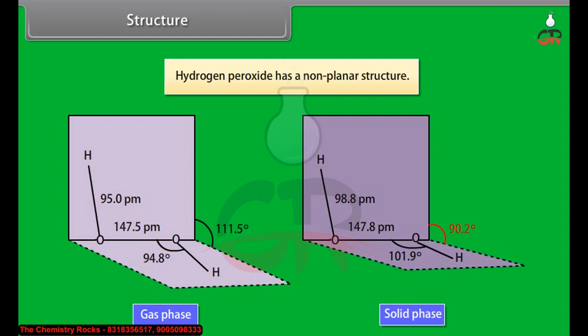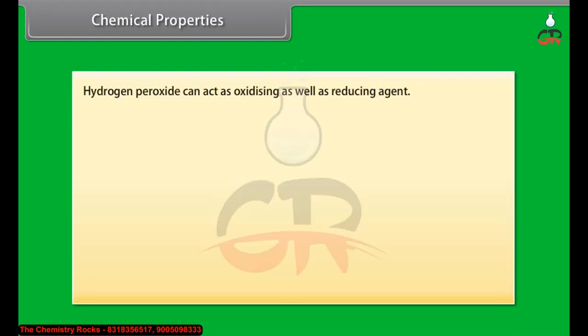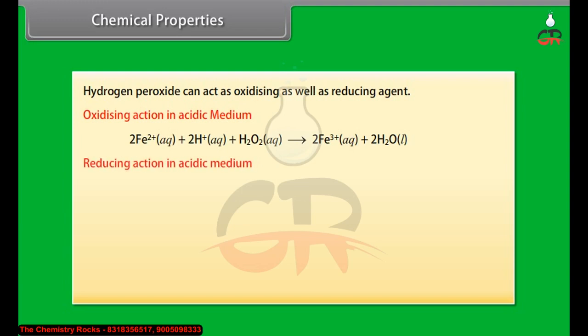Chemical properties: hydrogen peroxide can act as an oxidizing as well as reducing agent. It shows oxidizing action in acidic medium, reducing action in acidic medium, oxidizing action in basic medium, and reducing action in basic medium.